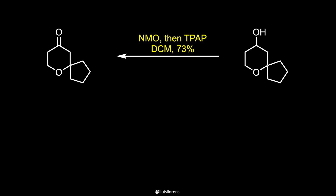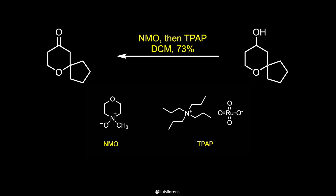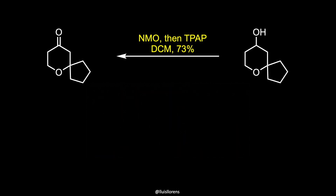The resulting alcohol was further oxidized to the corresponding ketone via a Ley-Griffith oxidation. The Ley-Griffith reaction is the oxidation of primary or secondary alcohols to aldehydes or ketones. The central catalyst is tetrapropylammonium perruthenate, which is used in combination with the co-oxidant N-methylmorpholine N-oxide.